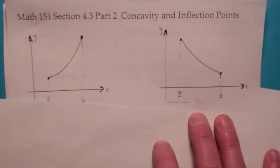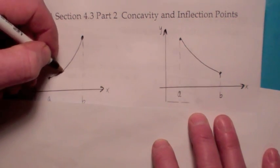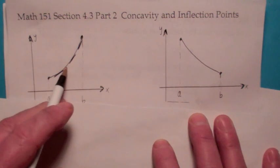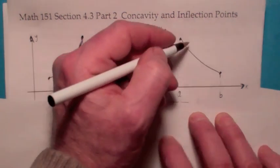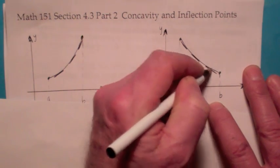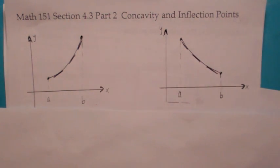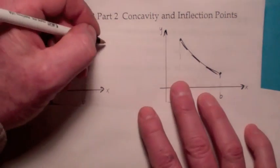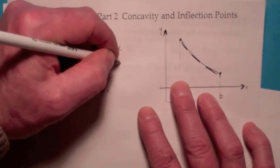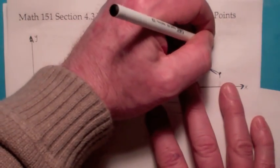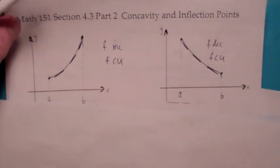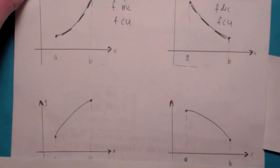The way we define it more formally in the book is: if you draw the tangent line to the graph where it's concave up, the tangent line will always lie below the graph — the graph lies above its tangent line. Notice F is increasing but F is concave up, and here F is decreasing but F is concave up. So concavity and increasing/decreasing have nothing to do with each other.